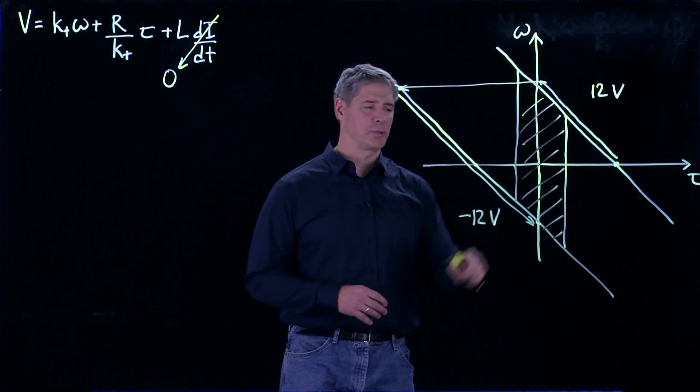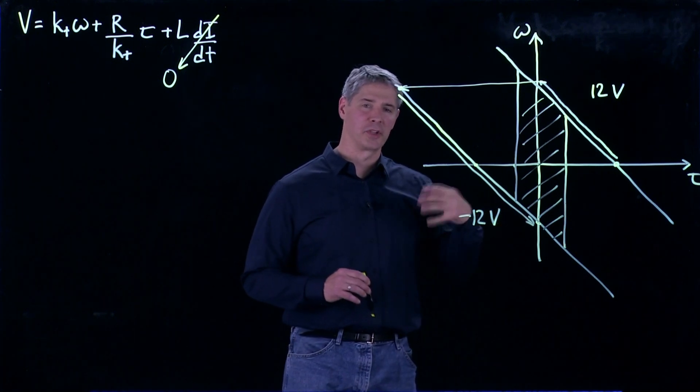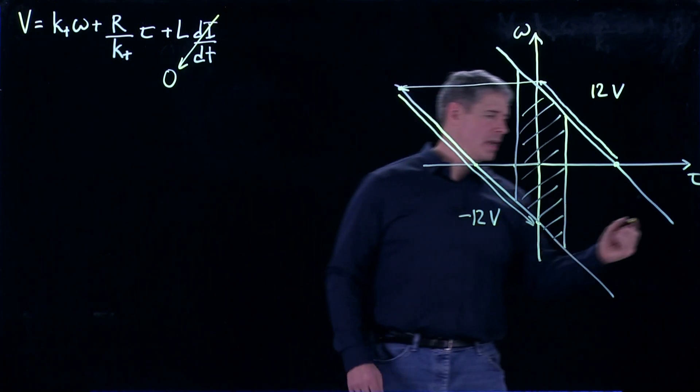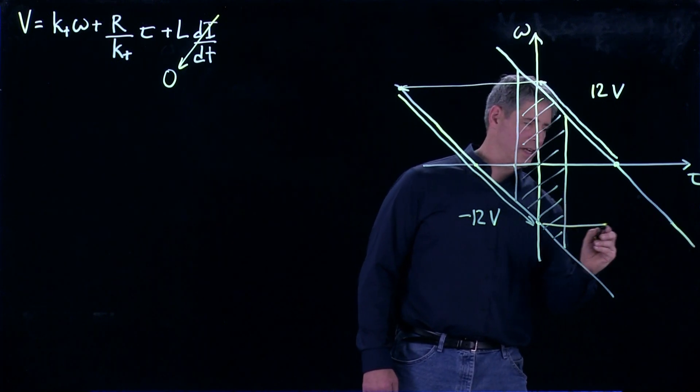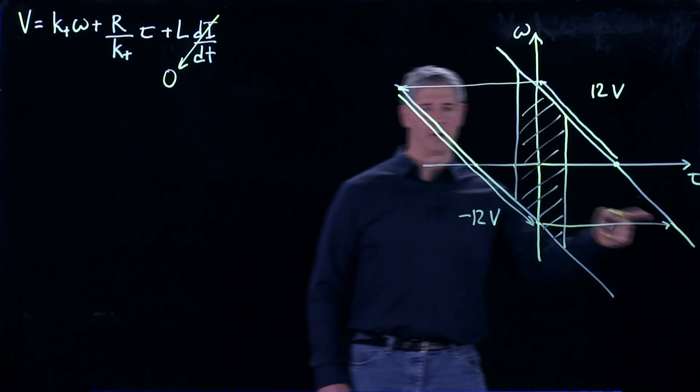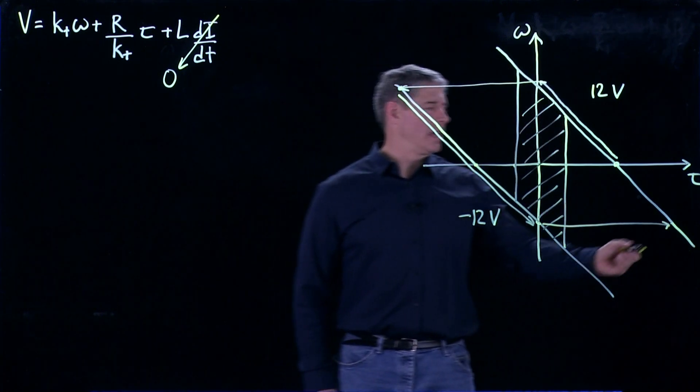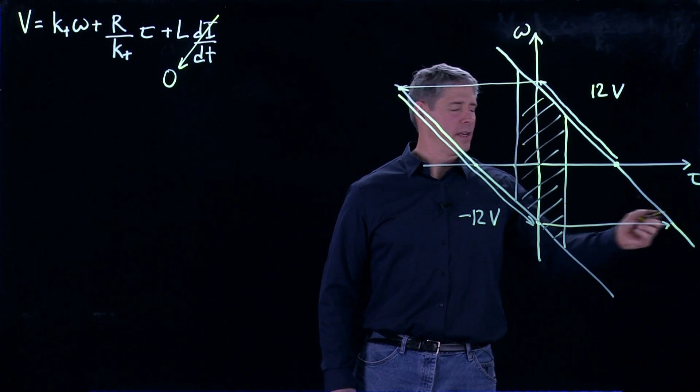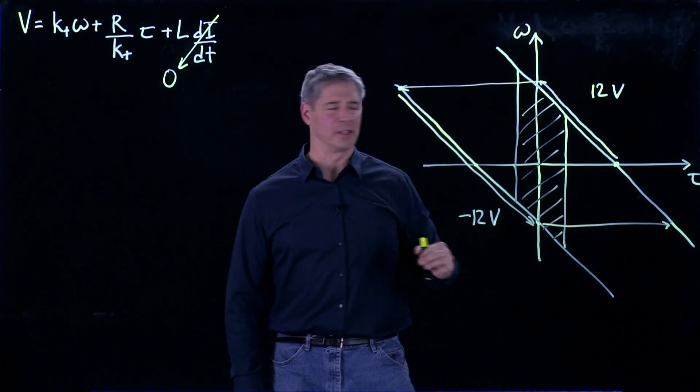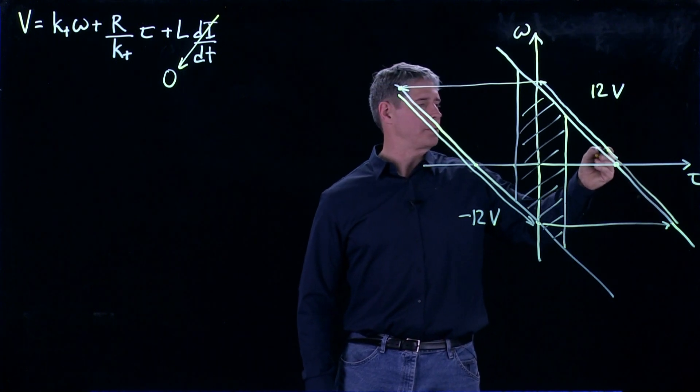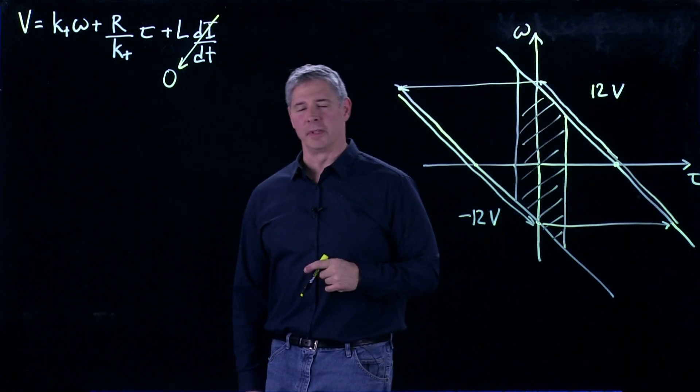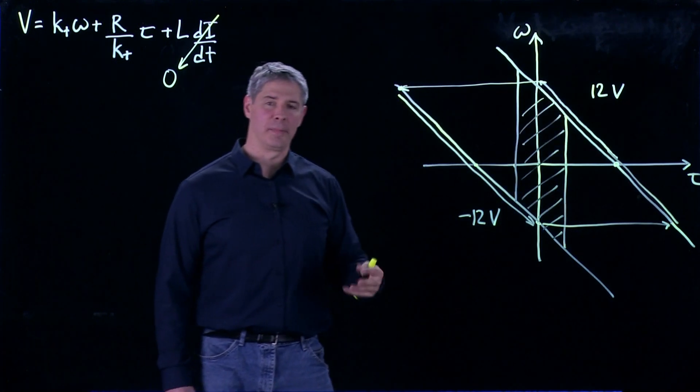And then at this point, once we hit the no-load speed in the negative direction, we switch back to 12 volts. And so again, instantaneously, the velocity is not going to change, but the voltage does. So we jump over to here. And then what's going to happen if we hold the voltage constant at 12 volts? The motor is going to move from this point up through here, and then again, up to the no-load speed in the positive direction.